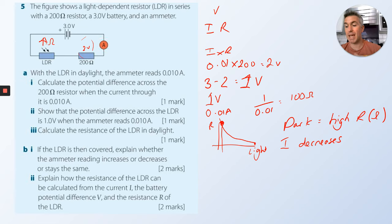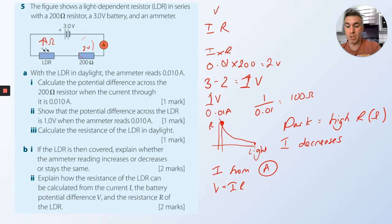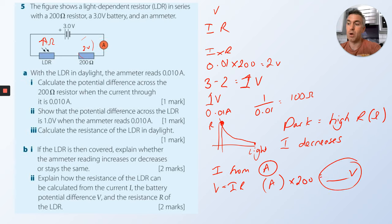Explain how the resistance of the LDR can be calculated. Read the current from the ammeter. Using that value, apply V = IR for the fixed 200 ohm resistor to find the voltage across it. Then do 3 minus that value to find the voltage across the LDR. Knowing the current and voltage in the LDR, you can calculate its resistance.